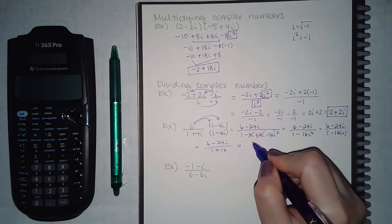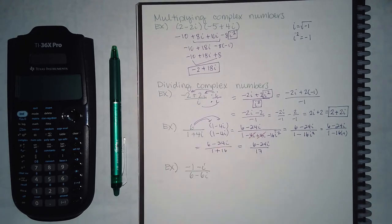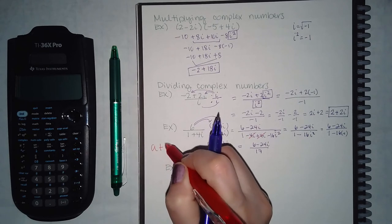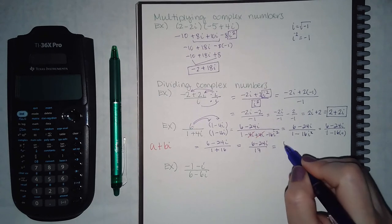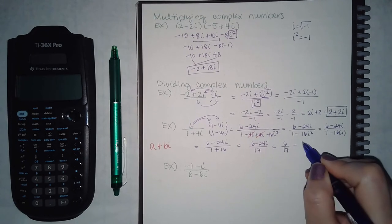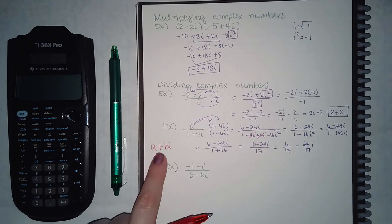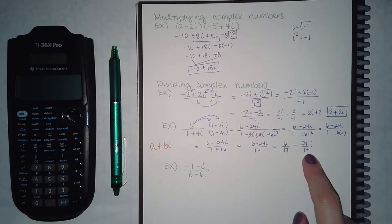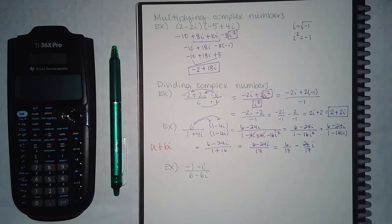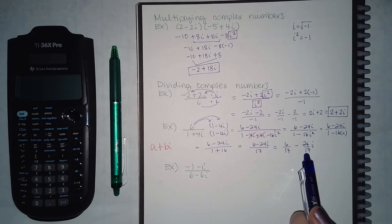In the denominator I really have 1 plus 16, because negative times negative gives a positive, which equals 17. The form requires the real number first and imaginary number next, so I split the fraction: 6 over 17 minus 24 over 17 times i. These fractions don't reduce, so this is the final answer.